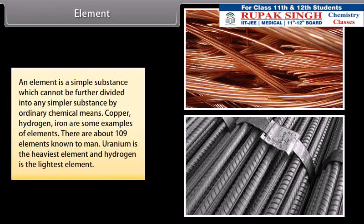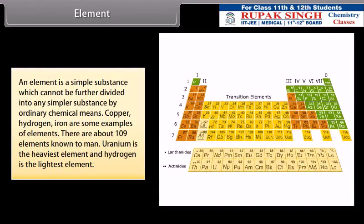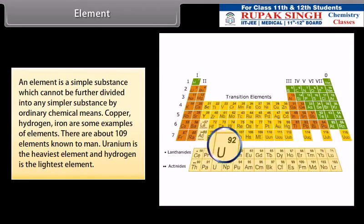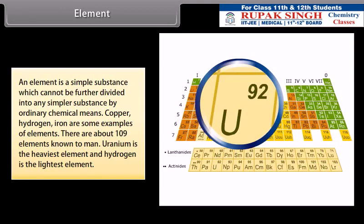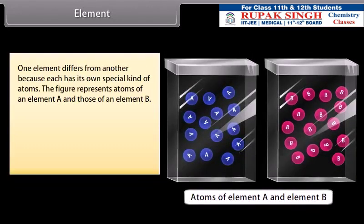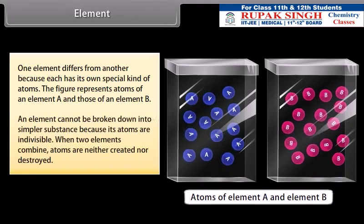An element is a simple substance which cannot be further divided into any simpler substance by ordinary chemical means. Copper, hydrogen, and iron are some examples of elements. There are about 109 elements known to mankind. Uranium is the heaviest element and hydrogen is the lightest element. One element differs from another because each has its own special kind of atoms. The figure represents atoms of an element A and those of an element B.